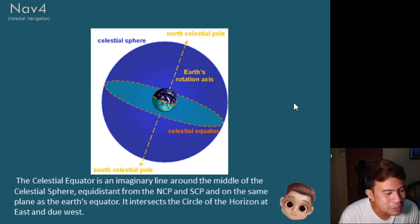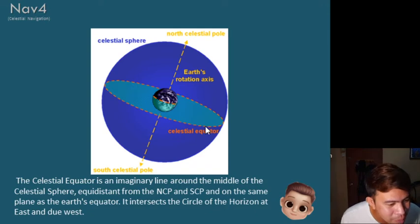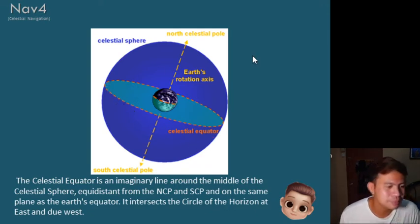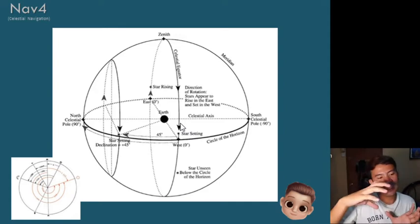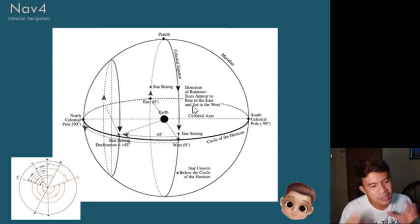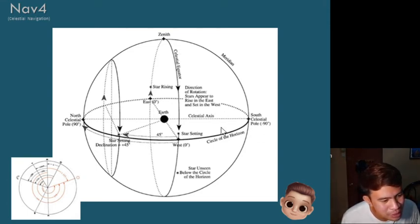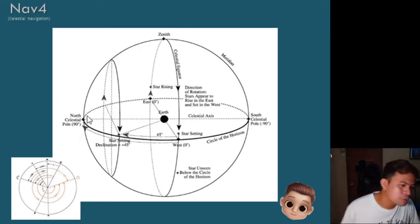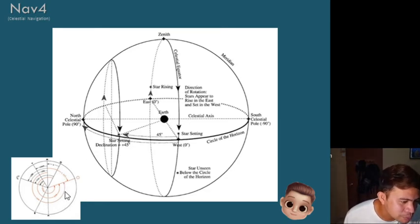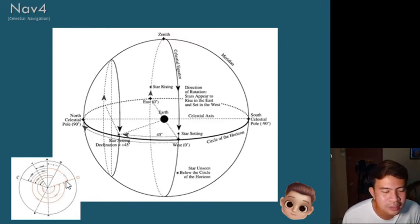The celestial equator is an imaginary line around the middle of the celestial sphere, as defined. As you can see in the illustration, the celestial equator here — similar to the Earth's equator — is equidistant from the North and South Celestial Poles. The south celestial pole is on one side and the north celestial pole is on the opposite side. This orientation will later serve as the basis for identification in our star diagrams.